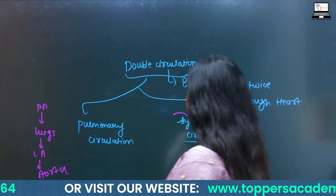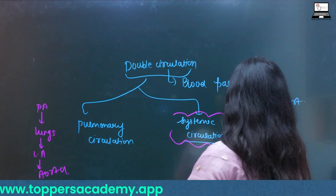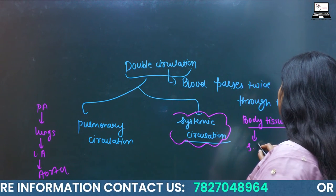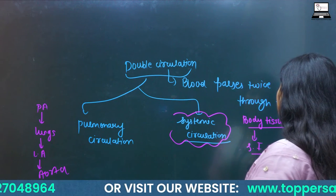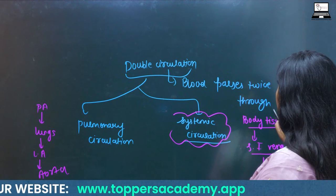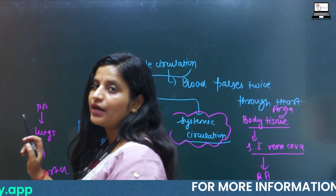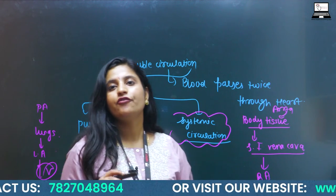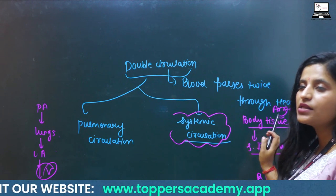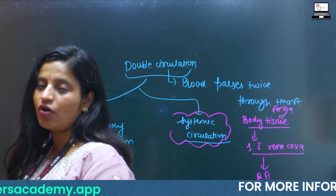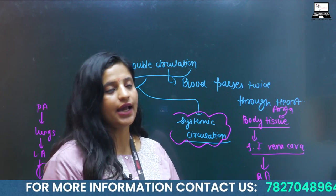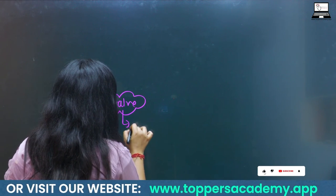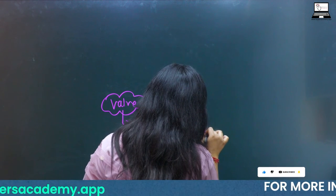Systemic circulation: the aorta delivers oxygenated blood to body tissues and organs. The blood then becomes deoxygenated and is sent back via the superior and inferior vena cava to the right atrium, completing the cycle. The function of valves is to prevent the backflow of blood. These valves are muscular flaps.